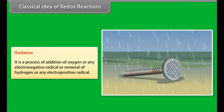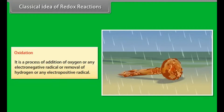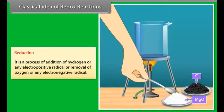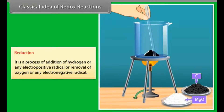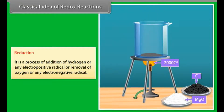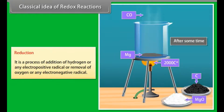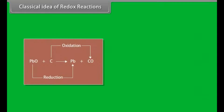Oxidation is a process of addition of oxygen or any electronegative radical, or removal of hydrogen or any electropositive radical. Reduction is a process of addition of hydrogen or any electropositive radical, or removal of oxygen or any electronegative radical. For example, in the reaction of PbO and carbon, oxygen is being removed from lead oxide and is being added to carbon. Thus, PbO is reduced while C is oxidized.